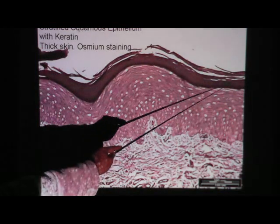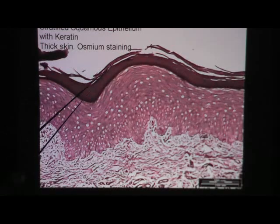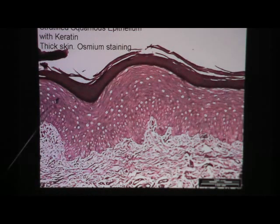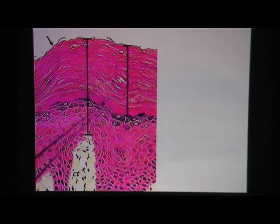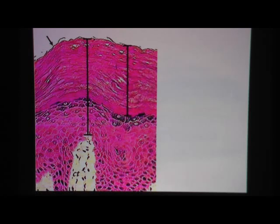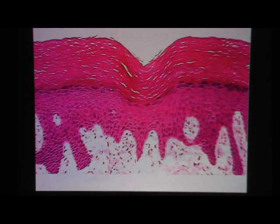Here you can easily see the keratin layer, and once you see that, it gives it away that all of this is stratified squamous epithelium — a dry skin area. Very thick keratin layer here gives it away that all of this is stratified squamous epithelium. Remember, only stratified squamous epithelium will have the keratin layer if it's dry skin. No other epithelial tissue will have keratin.